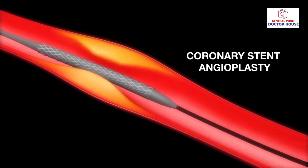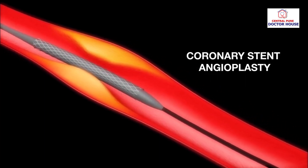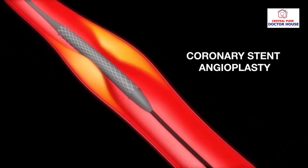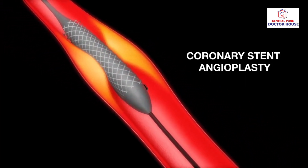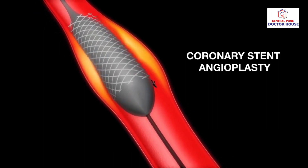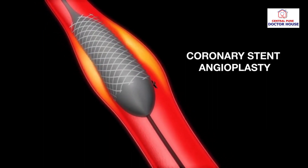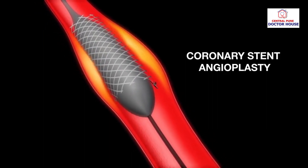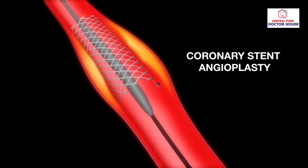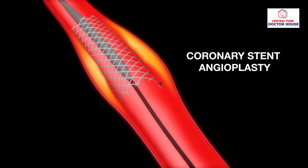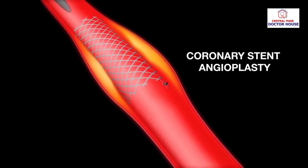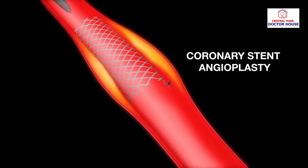When the balloon is inflated, the stent expands and locks itself into place. The deflated balloon and catheter are then withdrawn, leaving the stent behind to hold the artery open permanently.